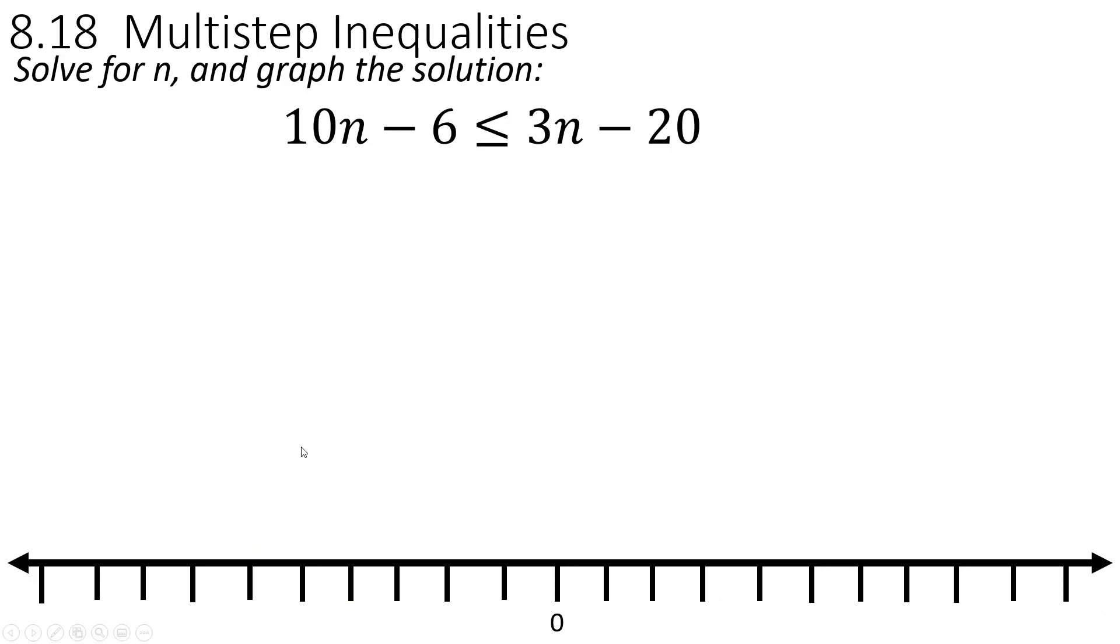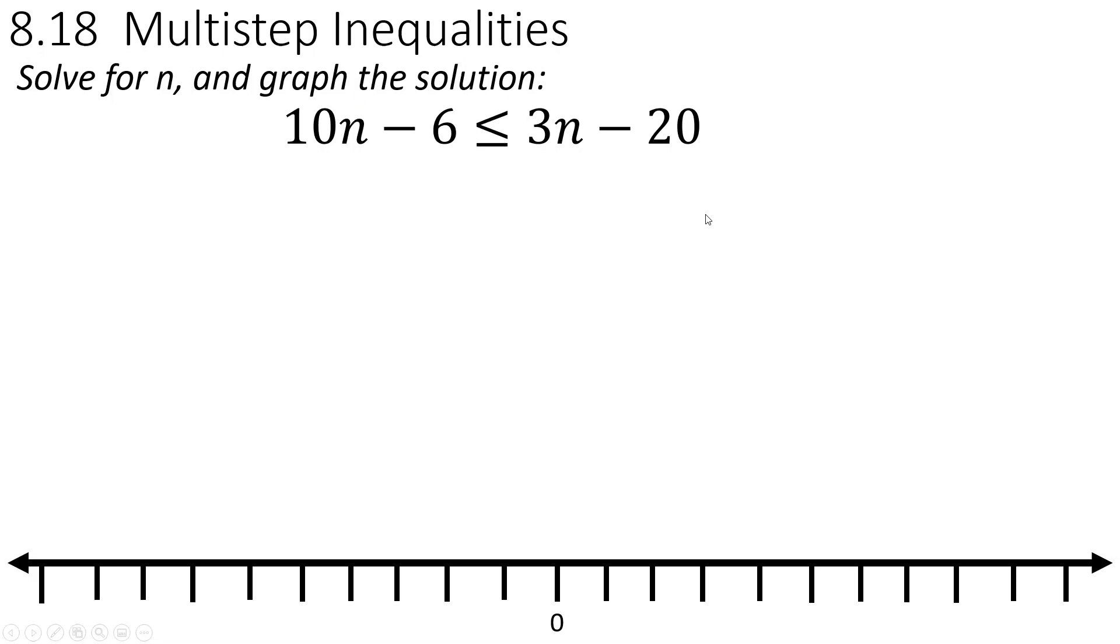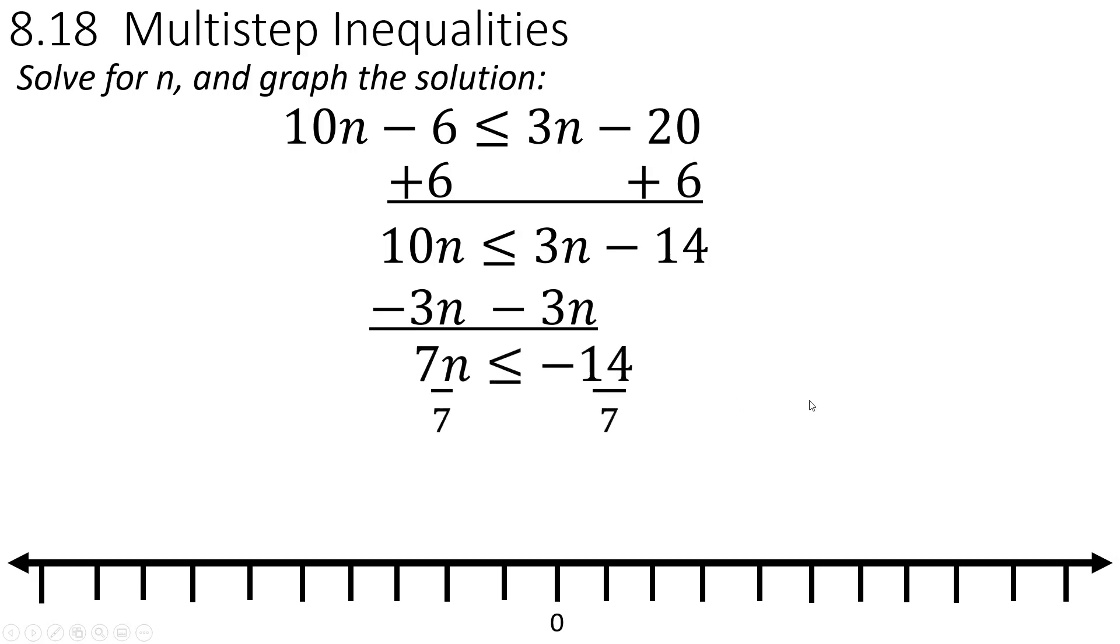We have an inequality. Same thing as equations. We're going to solve it and then graph it. So, we've got 10n minus 6 being less than or equal to 3n minus 20. So, I'm going to go ahead and add 6 to both sides. I could have also subtracted 3n from both sides. It doesn't matter as long as you're doing things consistently. And we end up with this. So, the 6's are gone. So, now I'm going to subtract off the 3n from both sides and we get 7n equaling negative 14. Now, we solve for n. We just divide out the 7. And we get this. So, you can put a solid dot and going to the left. And that is about it. I hope this helps.